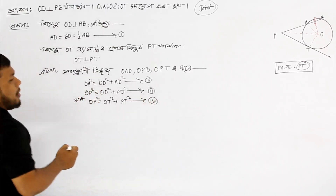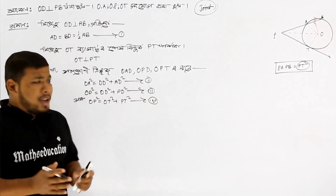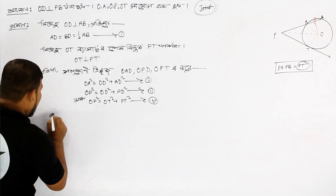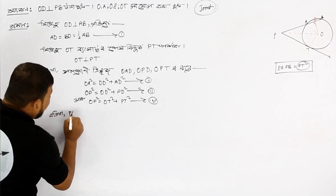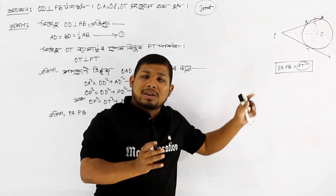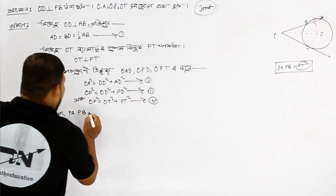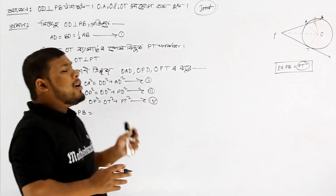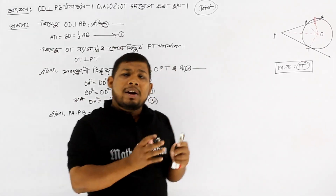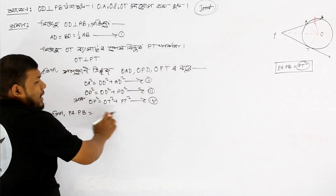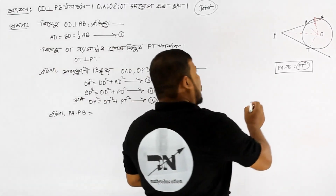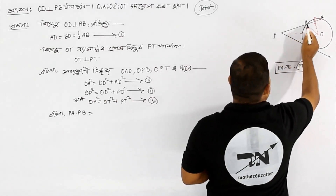So, if I am going to add O D squared plus P A into P B, I will be able to find O P A into P B. I will be able to add O D squared plus P A into P B.